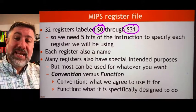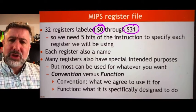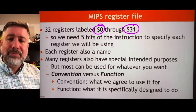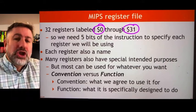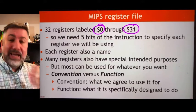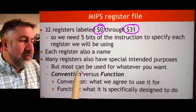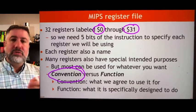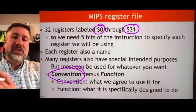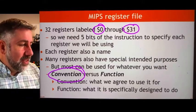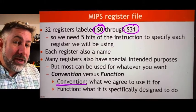Each register also has a name, which is part of the assembly language, not necessarily part of the machine code. We have a name that gives us some idea of the context and conventional use of that register. In hardware, the registers are all identical. But by convention — our decision on how to write code for this machine — we might treat some registers differently than others. This is important when we write code that other people might have to look at and use.